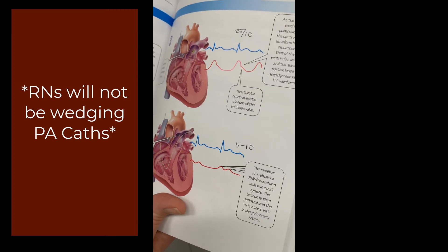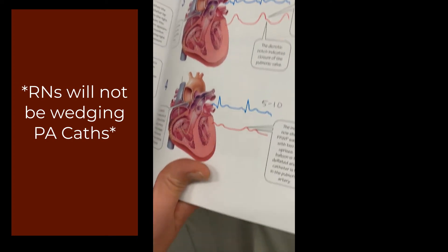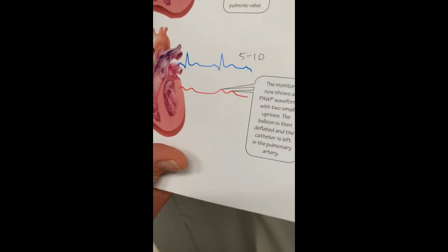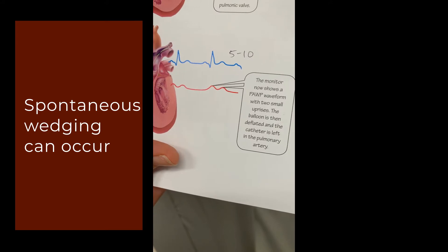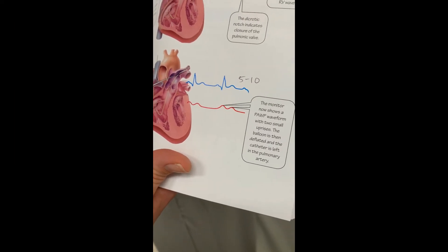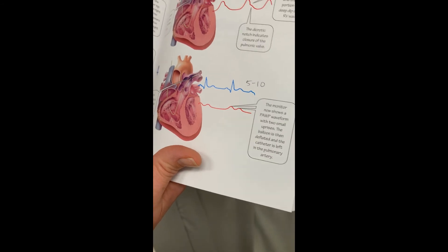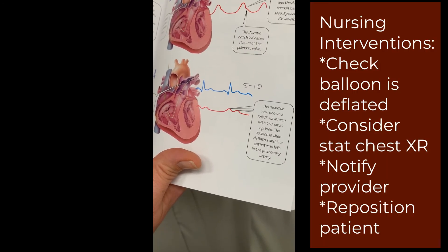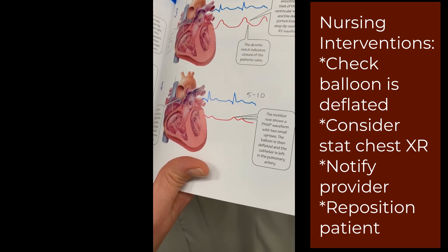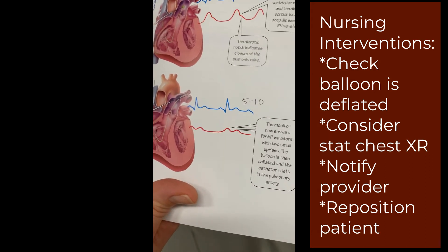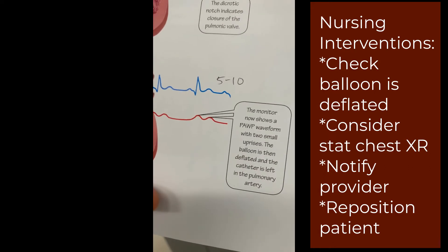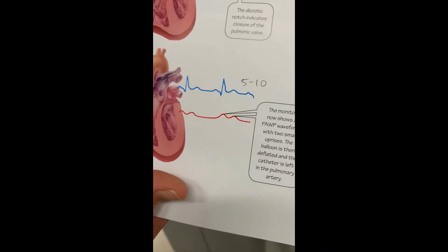A PA waveform looks similar to an arterial waveform — look up the normal pressures. And then a wedge waveform looks kind of similar to our CVP waveform — it's a little bit flatter. If you see that on your monitor, that is something we do not want. We don't want the PA catheter to be wedged for an extended period of time. If you see a wedge waveform, first check that your balloon is deflated. If it is deflated, you may need a stat chest X-ray to see how far out the catheter is, because sometimes these catheters can self-wedge — they can be too far out.